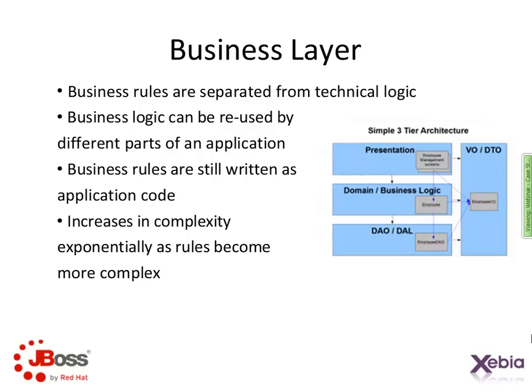Even without talking about rules engines, most of us are familiar with the concept of a business layer in software development. Even in the simplest applications, it's well-established best practice to separate business logic from the technical aspects of presentation and data access. This allows us to encapsulate the business logic for reuse, but still has pain points. As applications grow in complexity, it can be very hard to identify the relationship between business rules as defined by the analyst and the code necessary to implement those rules.